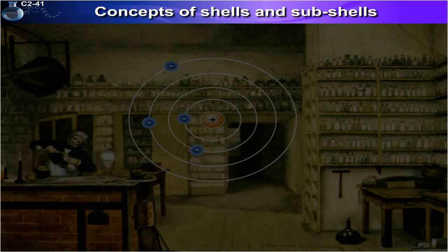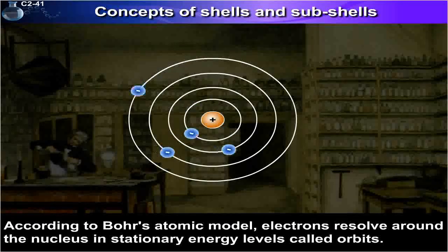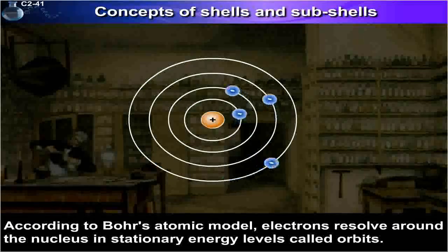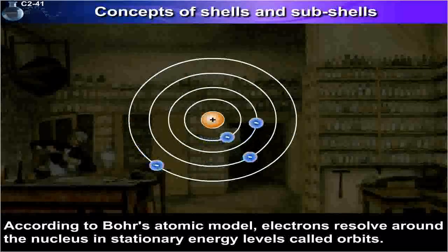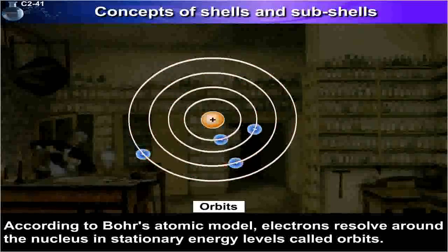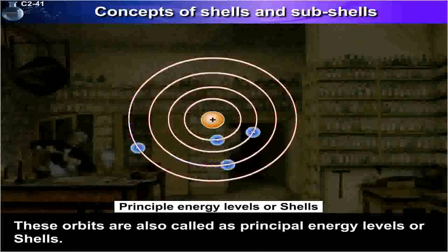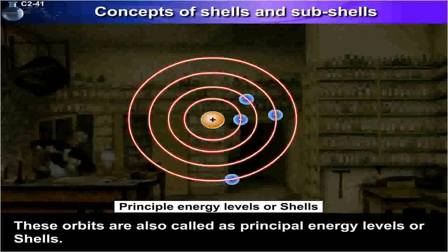Concepts of Shells and Sub-shells. According to Bohr's atomic model, electrons revolve around the nucleus in stationary energy levels called orbits. These orbits are also called principal energy levels, or shells.